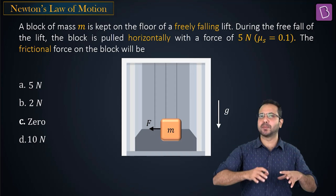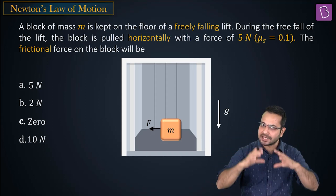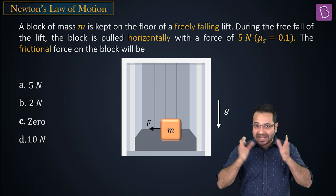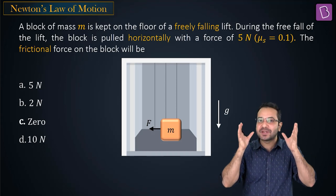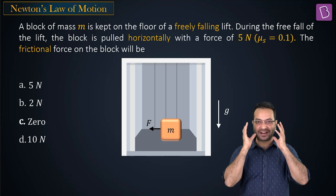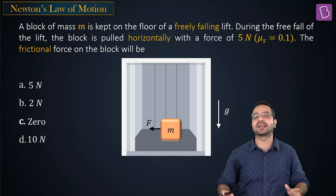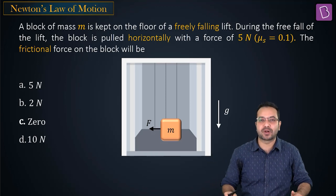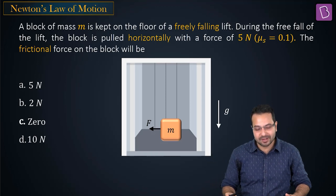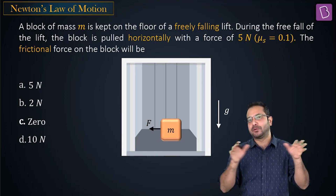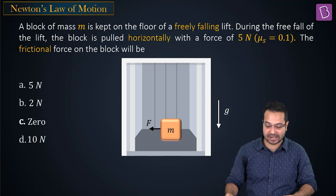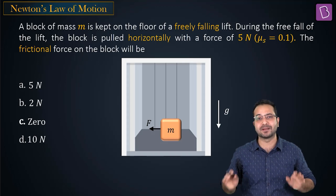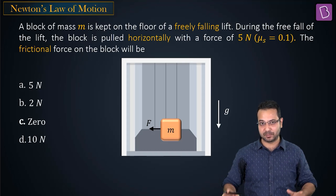The first thing that boggles my mind about this question is: who is this person inside a freely falling lift pulling an object? If you happen to be in a freely falling lift, you better run for your life — not be pulling an object. But it's a closed elevator, so might as well do some physics. It's the same person who buys 100 watermelons in a math problem.